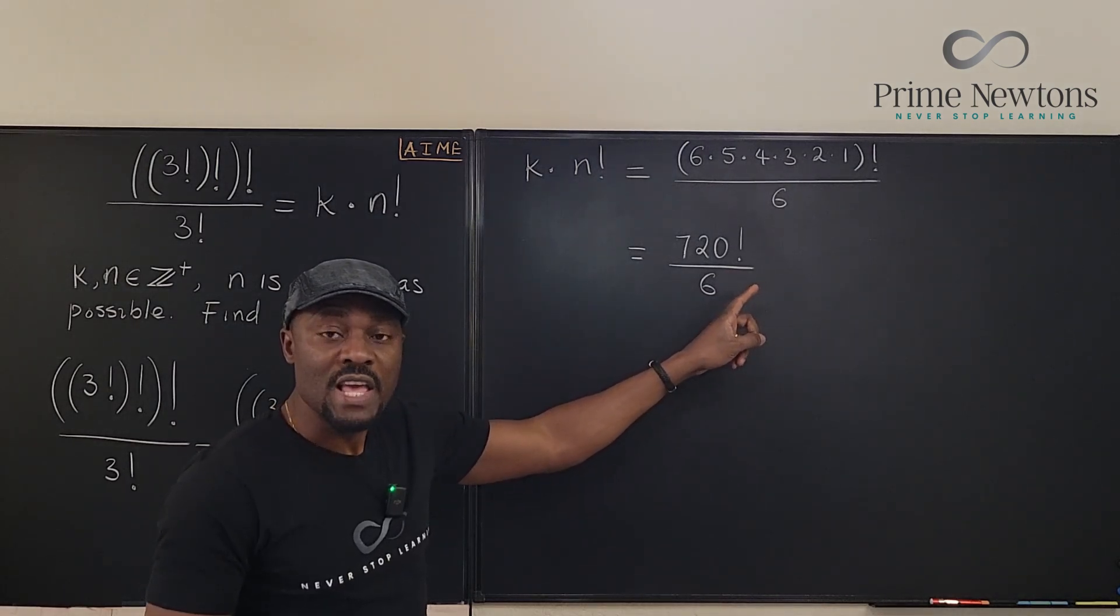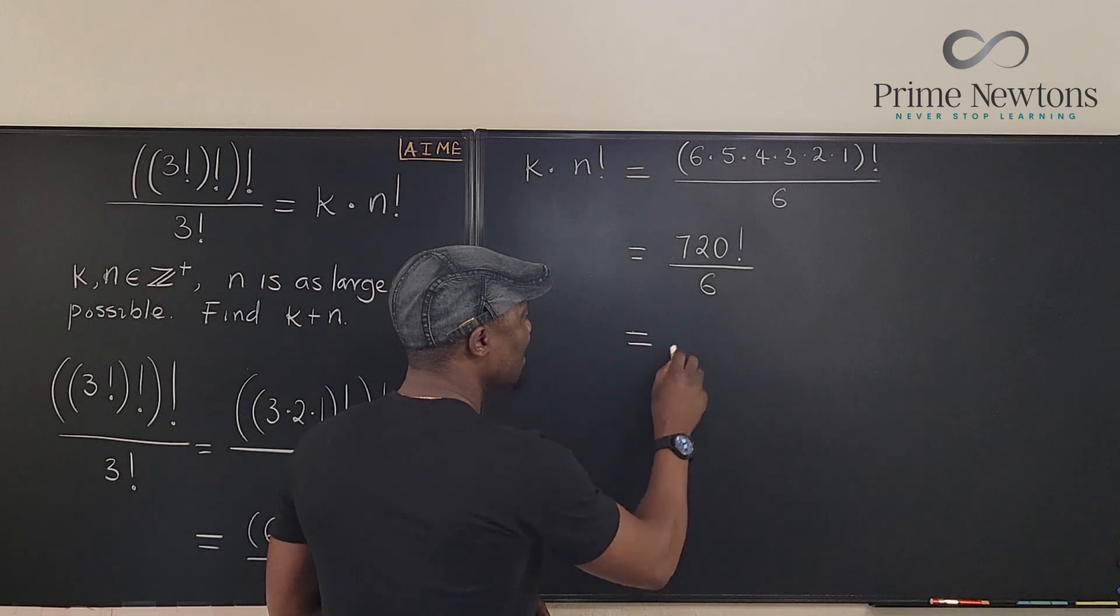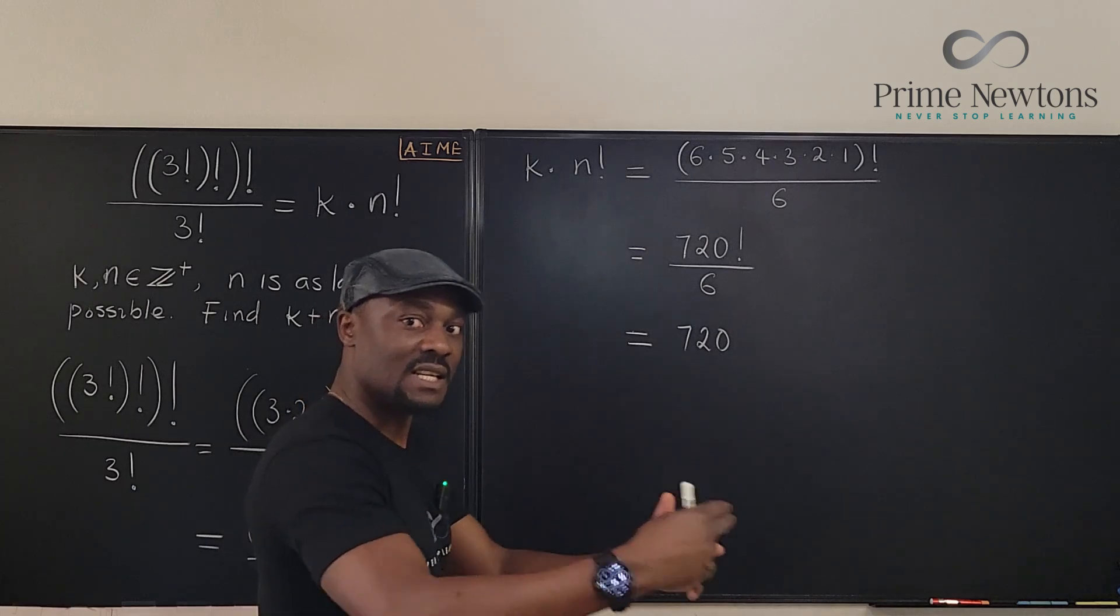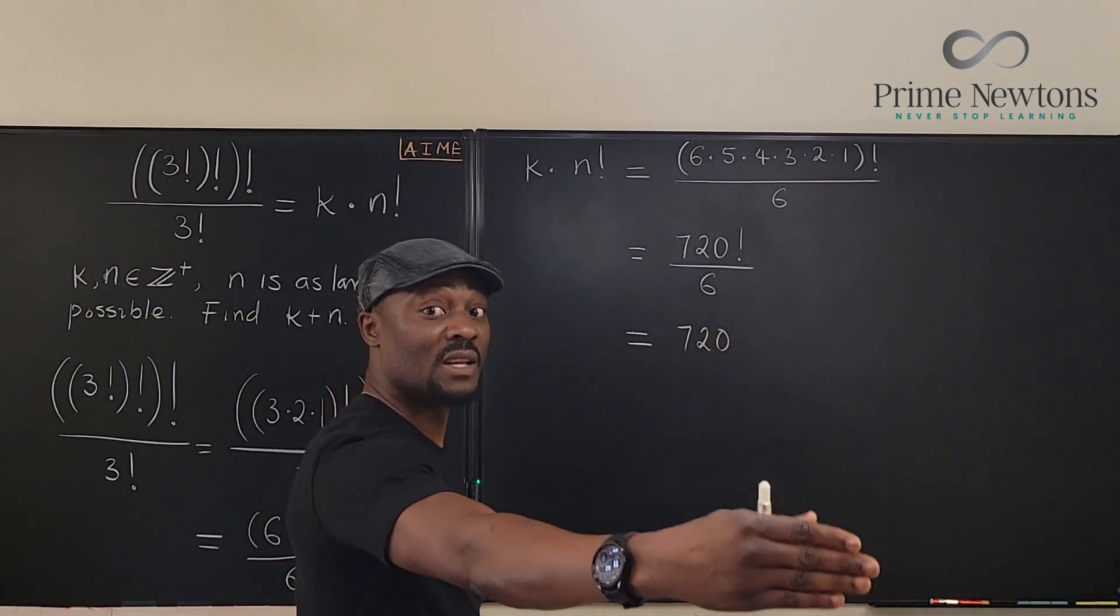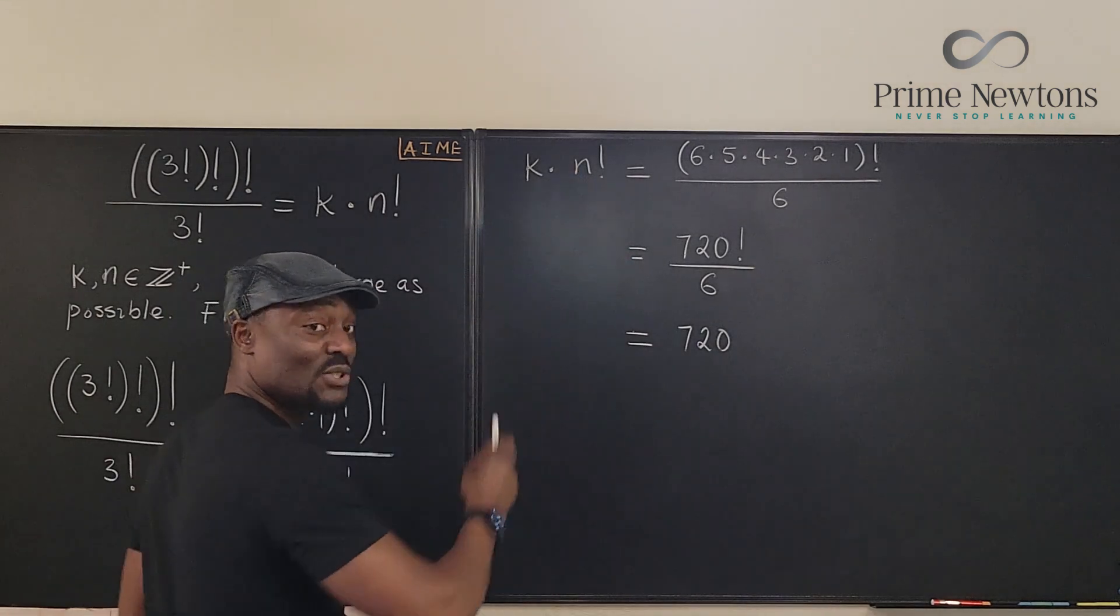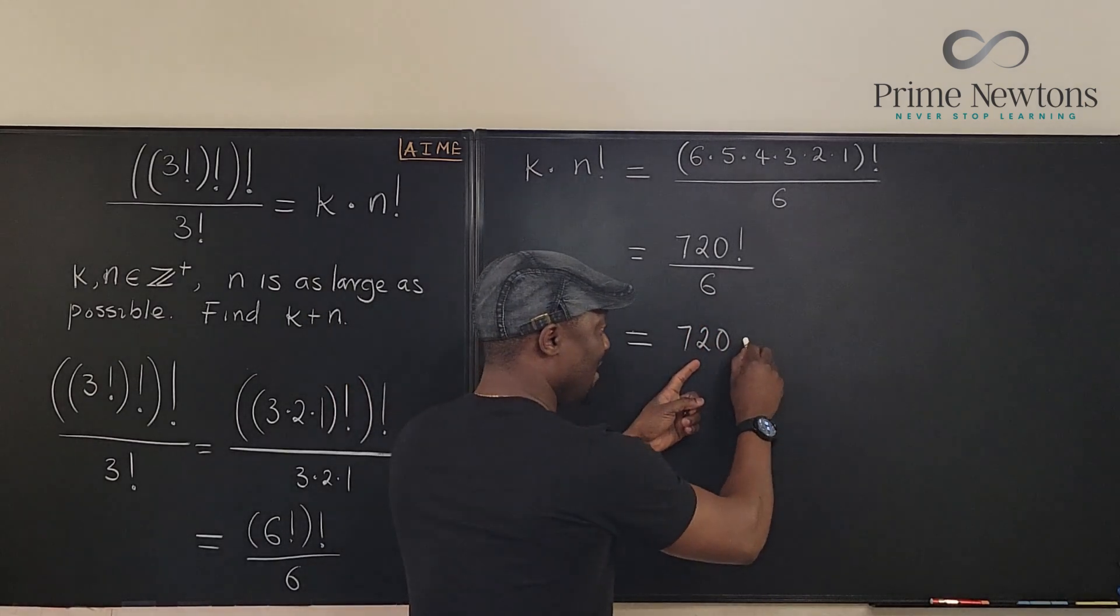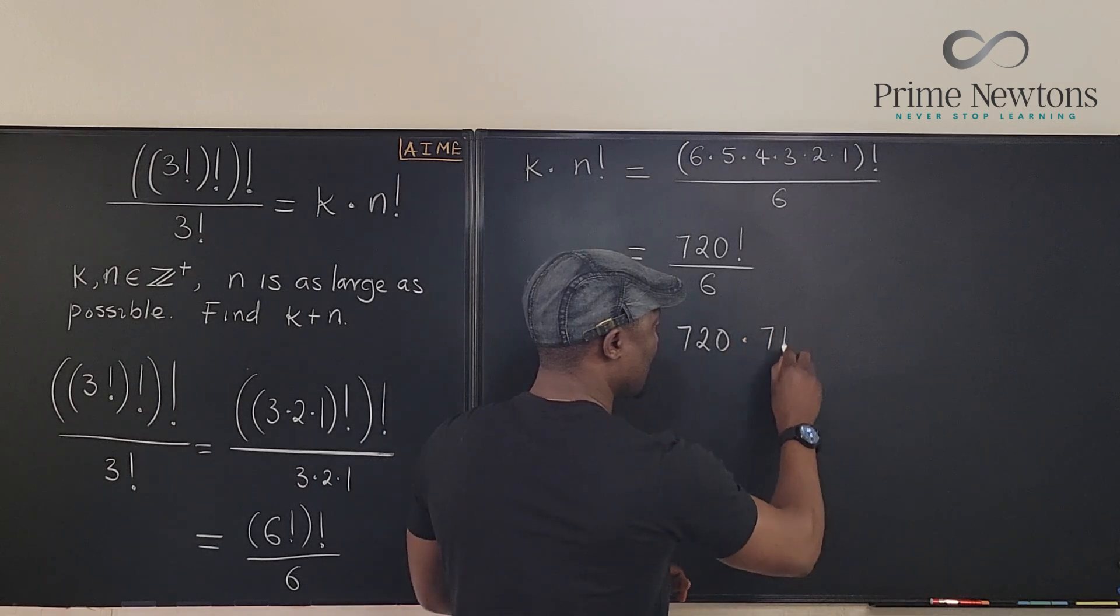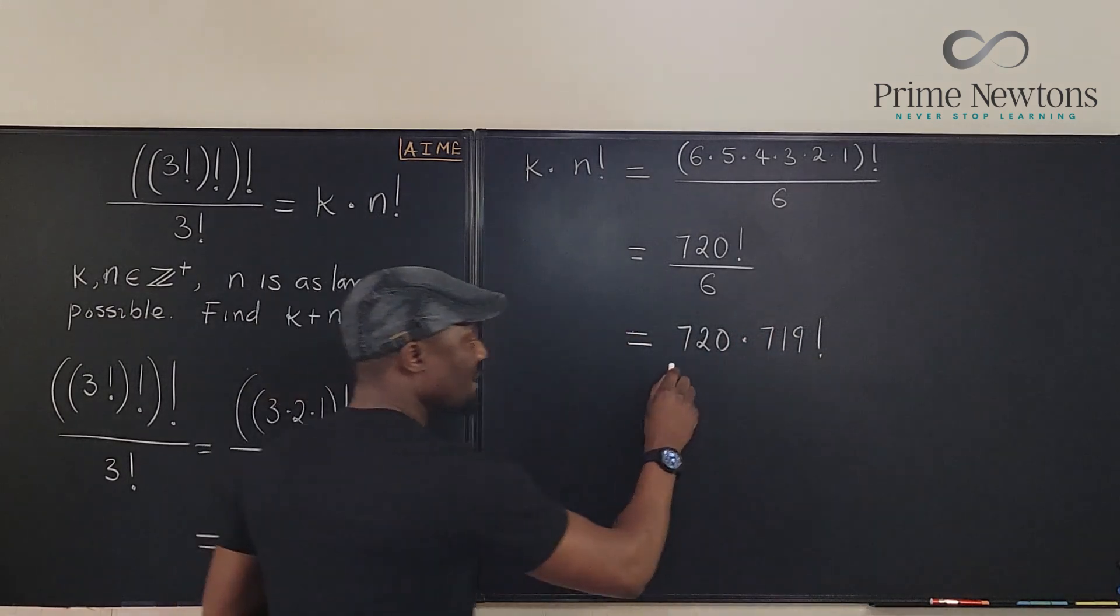Oh, if it is 720 factorial, I can actually write it as 720 times 719 times 718. You just keep going until you get to 1. But we don't need to get to 1 because what we're looking for is a factorial. But we need to get rid of this 6. So this guy is going to stay here and we write this as 719 factorial.